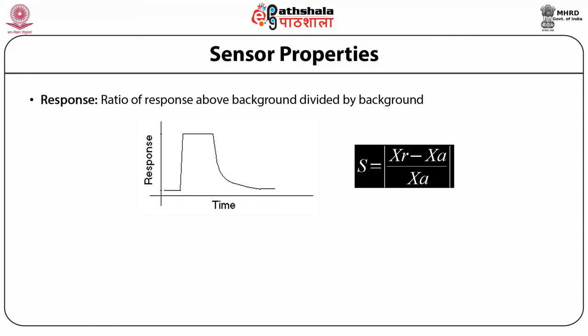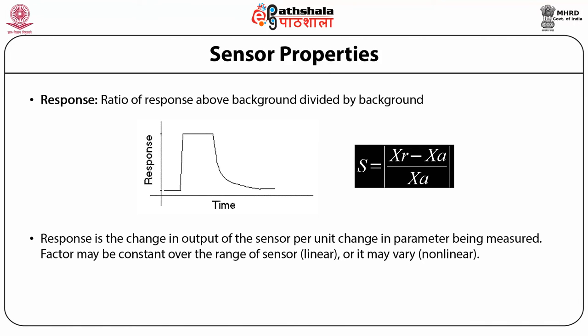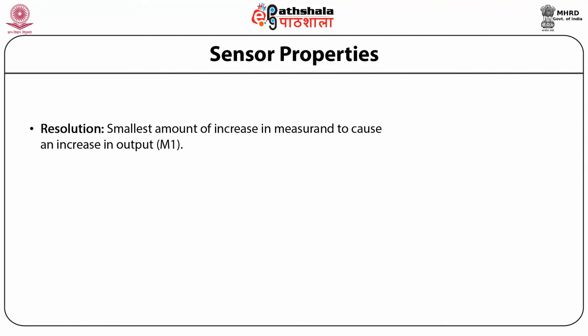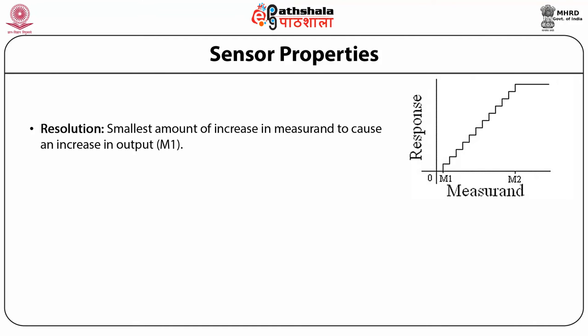The response is expressed as: c = |xr − xa| / xa. So the response is the change in the output of the sensor per unit change in the parameter being measured. This factor may be constant over the range of the sensor — that is linear — or it may vary non-linearly. Resolution is a very important parameter: it is the smallest amount of increase in the measurement to cause an increase in the output, denoted here as m1, as shown in the response versus measurement graph.